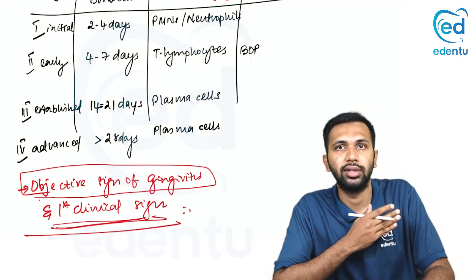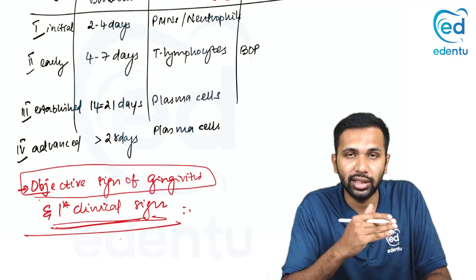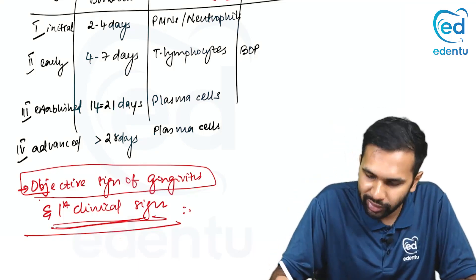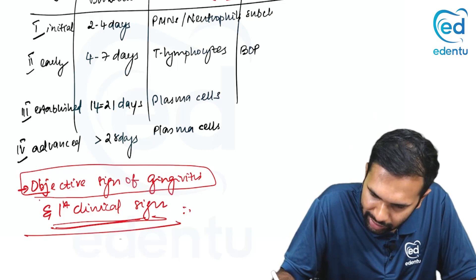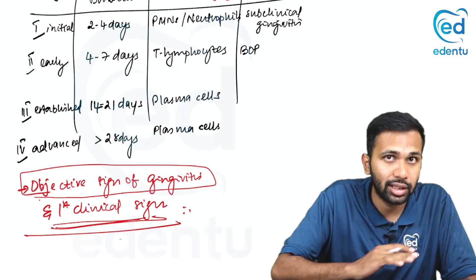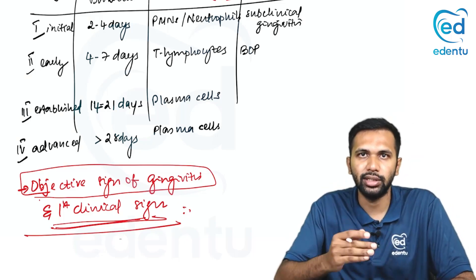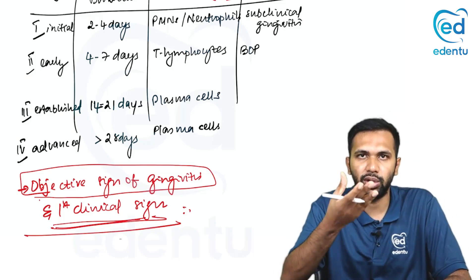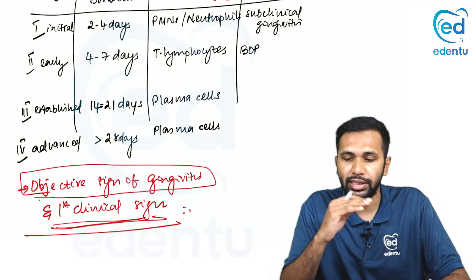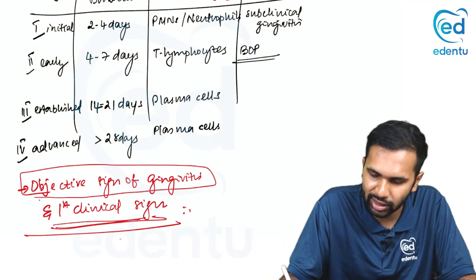If the first clinical signs are present in stage 2, then stage 1 is referred to as subclinical. In stage 1, there are no clinical signs. But if you take a histological section, you can see PMNs and neutrophils aggregating, and you can see increased GCF flow — all of these are subclinical signs, whereas the clinical signs are present in stage 2.